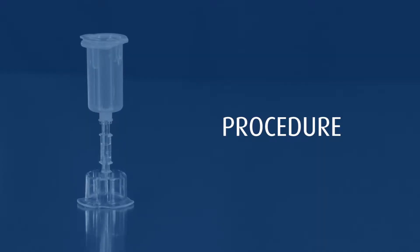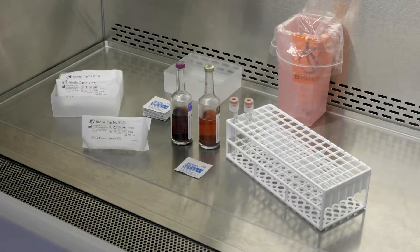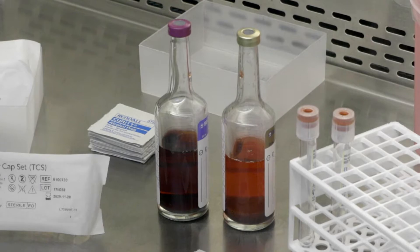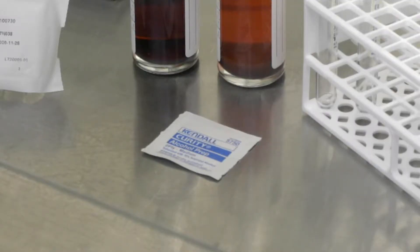Let's review the procedure for using the transfer capset. First, gather the materials needed for this procedure including a transfer capset, blood culture bottle, alcohol pad and vacuum tube.